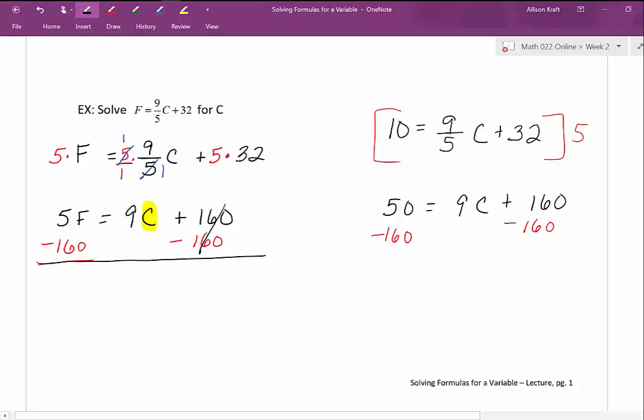We're going to do that exact same move on our actual problem, subtracting 160 from both sides. On the right, the 160's cancel out, leaving me with 9C. On the left, those are not like terms and can't be combined. I'm simply going to write them next to each other, 5F minus 160.